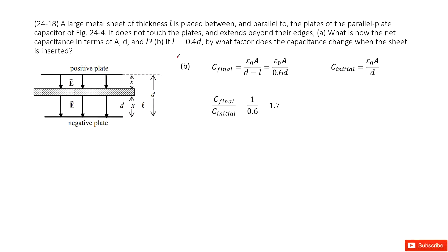The second question asks: if L equals 0.4D, by what factor does the capacitance change when the sheet is inserted? So we need to find how it changes—the ratio. That means we need to use the final capacitance over the initial capacitance.